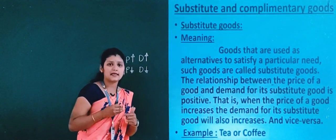The relationship between the price of a good and the demand for its complementary good is inverse — meaning opposite. When the price of a good increases, the demand for its complementary good decreases. This is just opposite to substitute goods. Vice versa: if the price decreases, then the demand for its complementary good will increase.